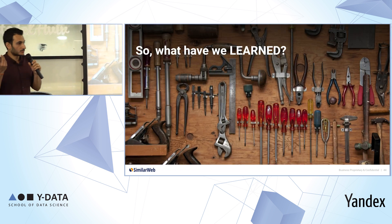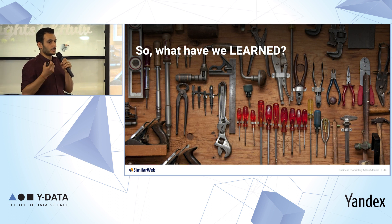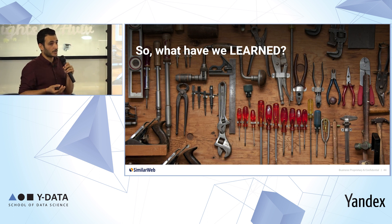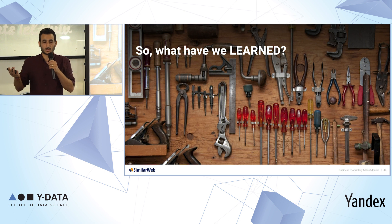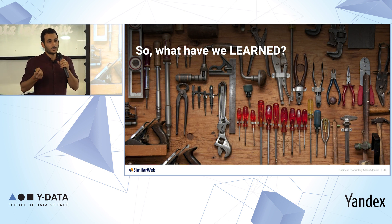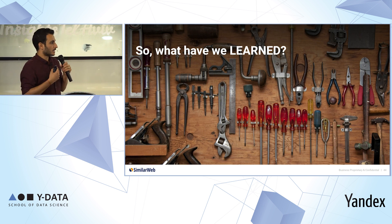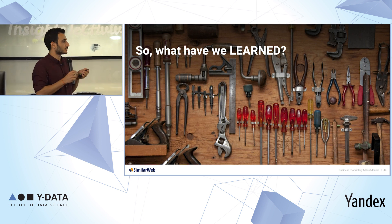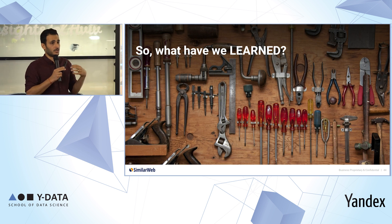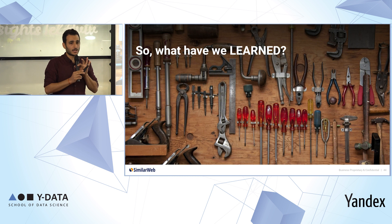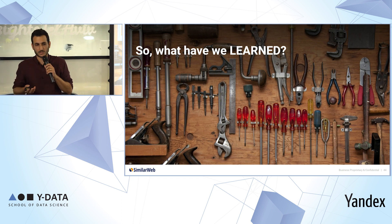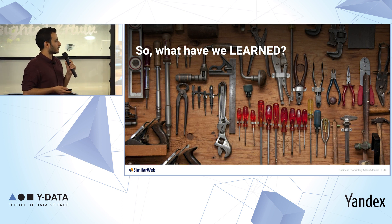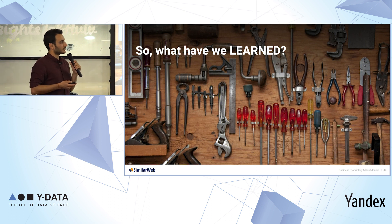To summarize: we talked about the problem of estimating the proportion of active users for a specific app given several biased panels. We covered naive solutions, a Bayesian estimator, and inverse propensity weighting — which gives weights to users according to how likely they are to be in the treatment or control group. We also discussed selection bias and how this method can be applied in daily routines when facing distribution mismatch.